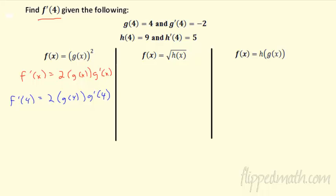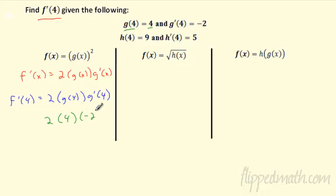Now it's just plug and chug. What is g(4)? g(4) = 4. So we've got 2 times 4. And g'(4) = -2. So 2 times 4 is 8, times -2 is -16.